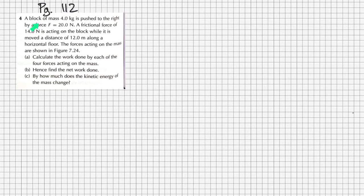This question says a block of mass 4 kilograms is pushed to the right with a force of 20 newtons. A frictional force of 14 newtons acts on the block as well, while it moves a distance of 12 meters along the horizontal floor. We're going to look at the work done by each of the forces acting on the mass, find the net work done, and then how much the kinetic energy of the mass changes.